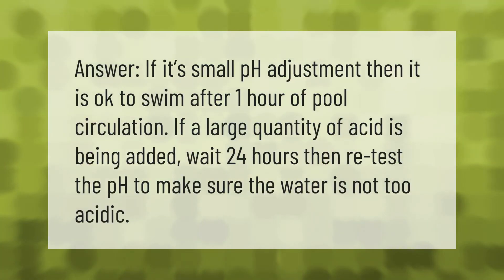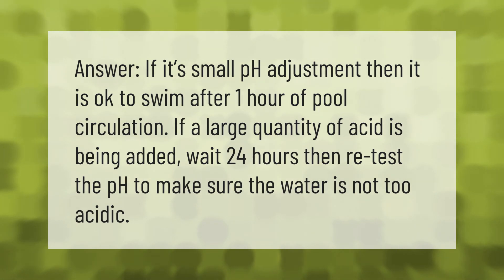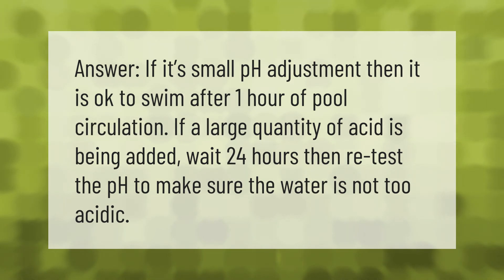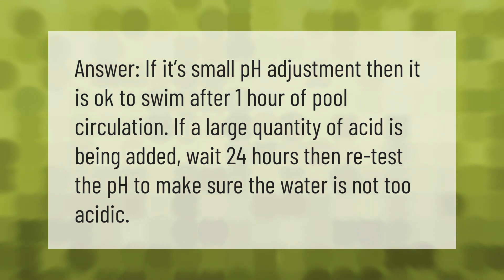If it's a small pH adjustment, then it is okay to swim after one hour of pool circulation. If a large quantity of acid is being added, wait 24 hours, then retest the pH to make sure the water is not too acidic.